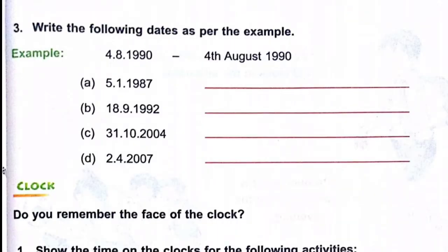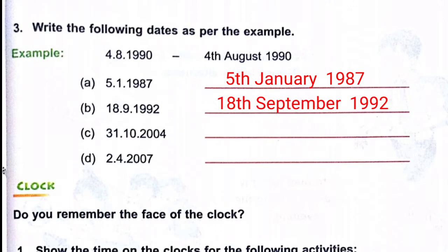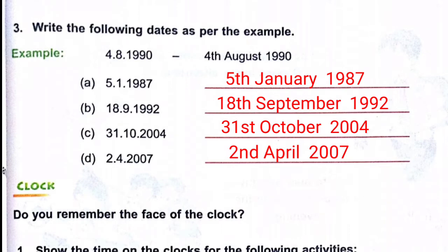Then write the following dates as per the example — convert short form to long form. For example, 5/1/1987 means 5 January 1987. Similarly, write 18 September 1992, 31 October 2004, and 2nd April 2007 in proper long form, following the example given.